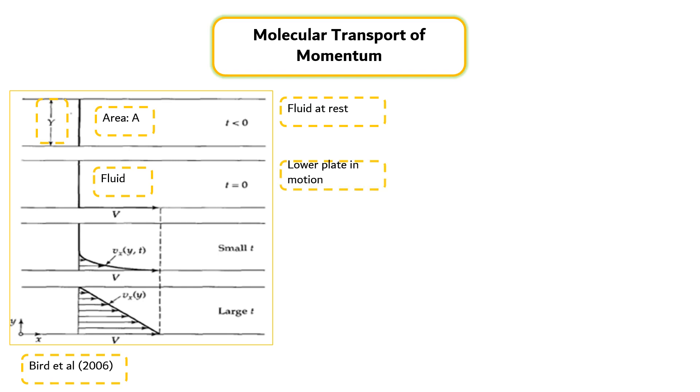the lower plate is set in motion in the positive x-direction at a constant velocity v. As time proceeds, the fluid gains momentum, and ultimately this linear steady-state velocity profile shown in the figure is established.